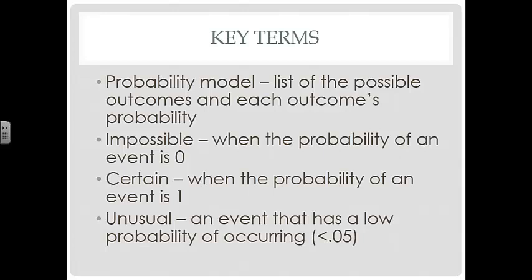And then we consider something to be unusual when it has a low probability of occurring. Now, often we use less than 0.05, but keep in mind that that's not set in stone. There are some circumstances where we would not even want a probability that's less than that. We would want it to be even smaller.